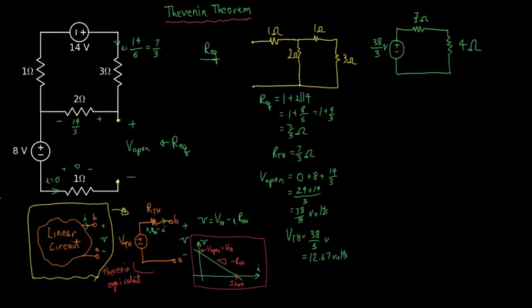The current through that device, we can solve now quite simply. Voltage 38 thirds over the total resistance, 7 thirds plus 4, which is 19 thirds. The current is exactly 2 amps.